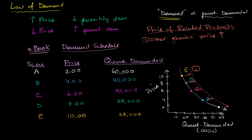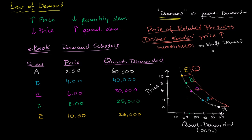These other e-books we can call substitutes for my product. People might say that other book looks kind of comparable — if one is cheaper, maybe I'll read one or the other. So in order to stay along this curve, we have to assume that substitutes' prices are constant. If other e-books' prices go up, it'll shift our curve to the right. If other e-books' prices go down, that will shift our entire curve to the left. So this is actually changing our demand — shifting demand to the right.